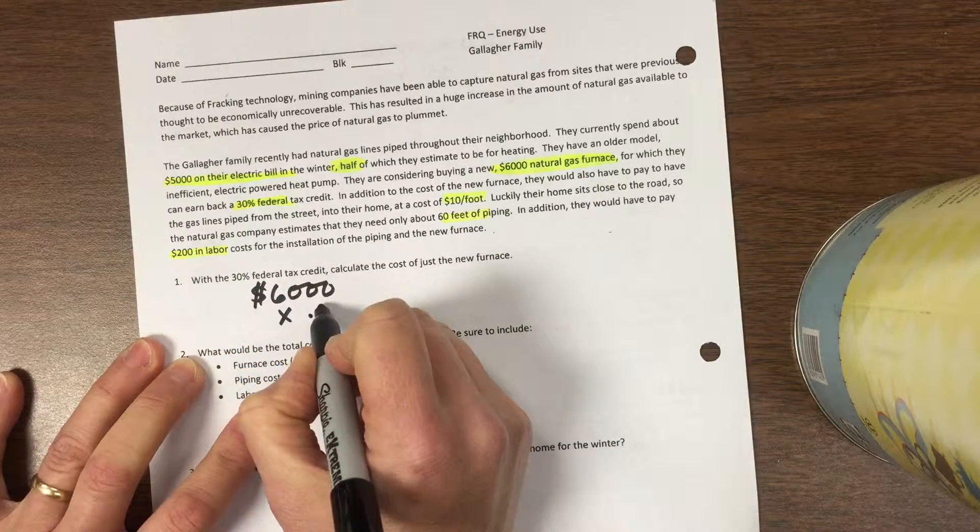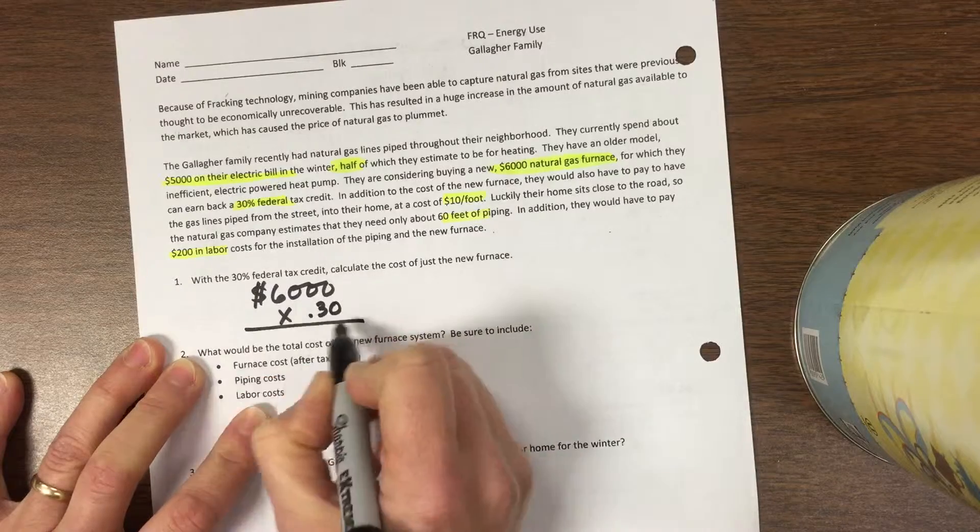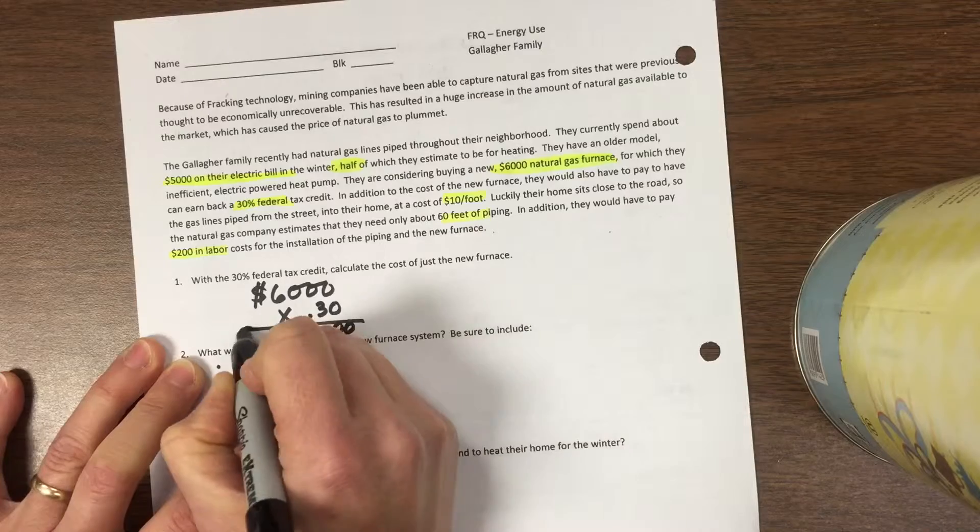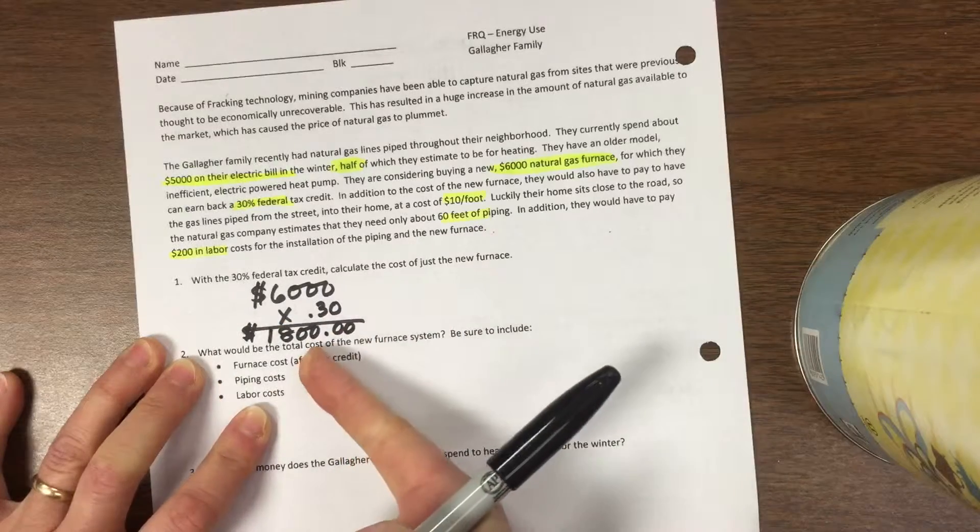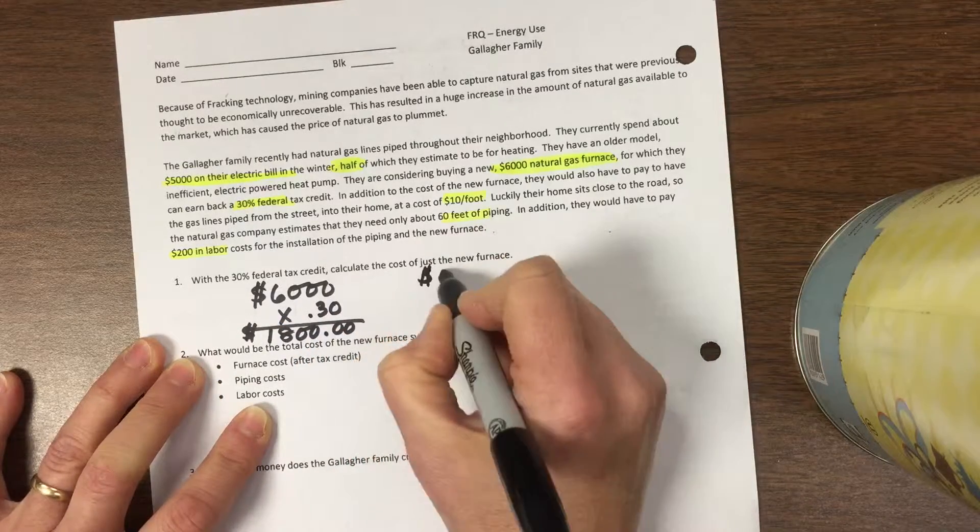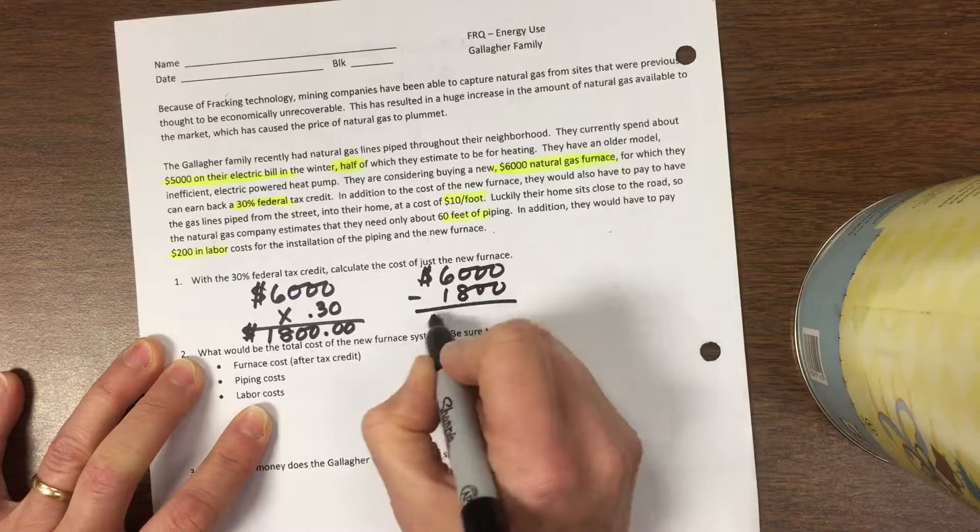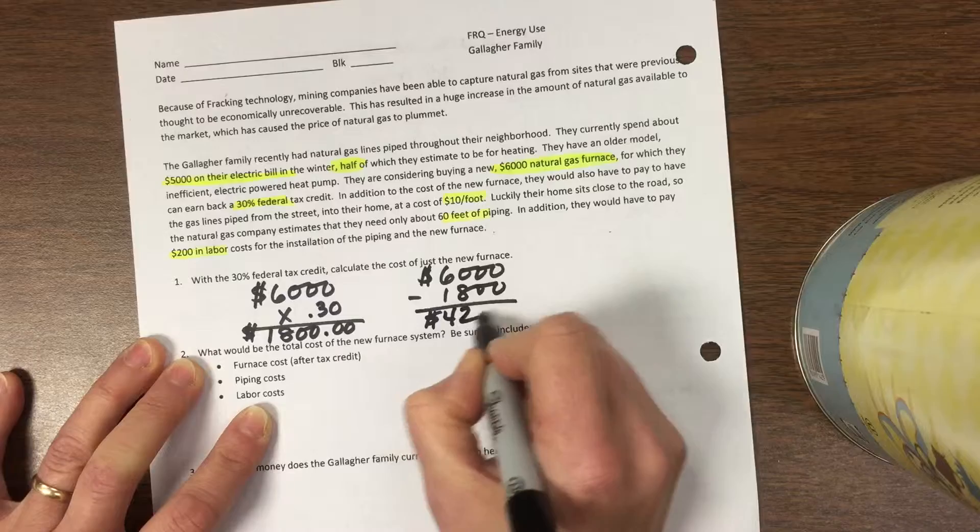So they're going to save $1,800 on their taxes. The actual cost—we have to subtract out those savings—so the actual cost of the furnace is going to only be $4,200.